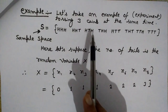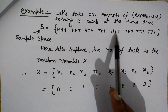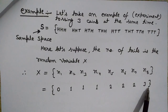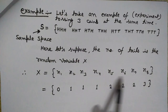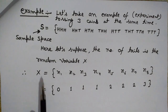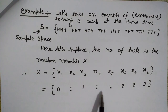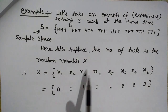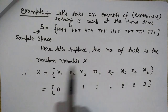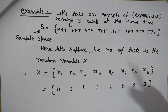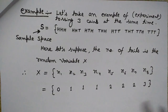So here we are taking the random variable as the number of tails. The number of tails can be zero, one, one, two, two, two, or three. So these are the values this variable x denotes — some values from the sample space — and we represent them as x1, x2, x3. This is the concept of sample space and random variable.